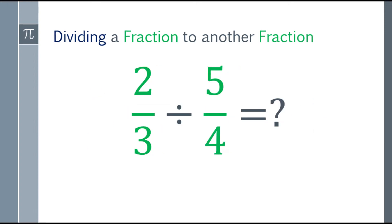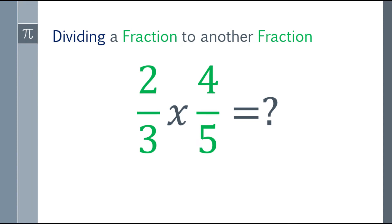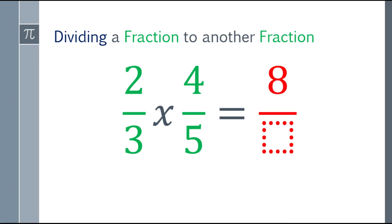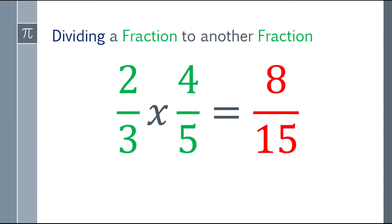Alright, so another example: two-thirds divide by five-fourths. Again, you have to take the reciprocal of five-fourths, so that will be four-fifths. Take the reciprocal of the divisor, and change the sign from division to multiplication. Let's start multiplying the numerators: two times four is eight. Next, the denominators: three times five is fifteen. And the final answer will be eight over fifteen, and that's already the lowest term. So that's the final answer.